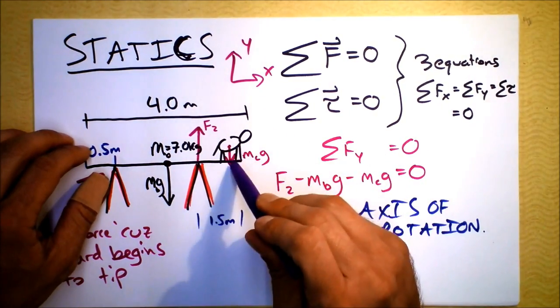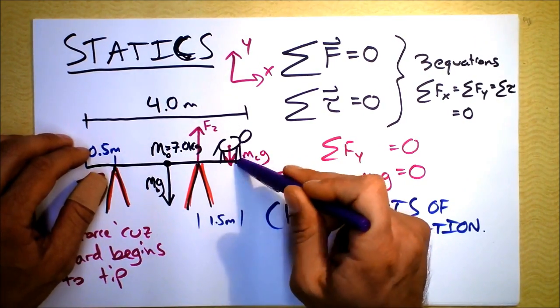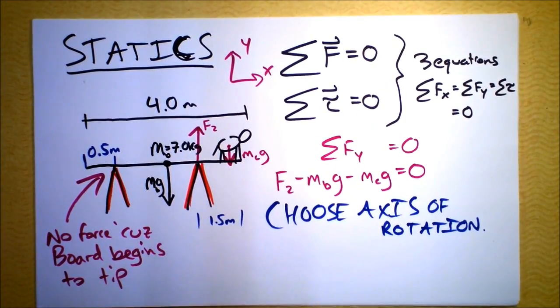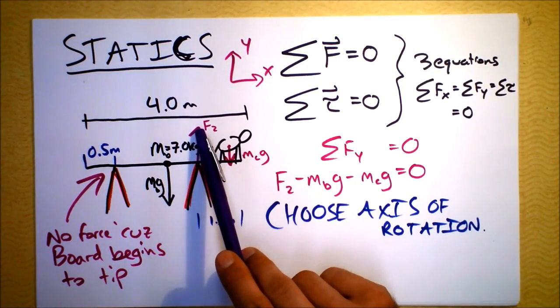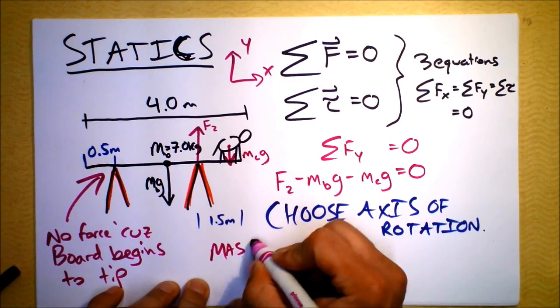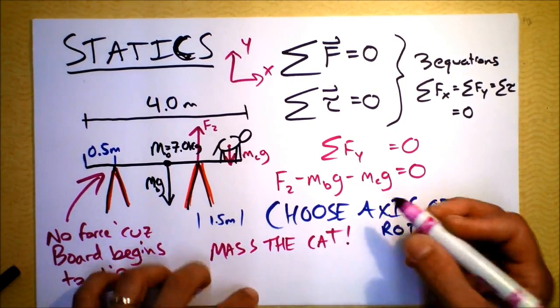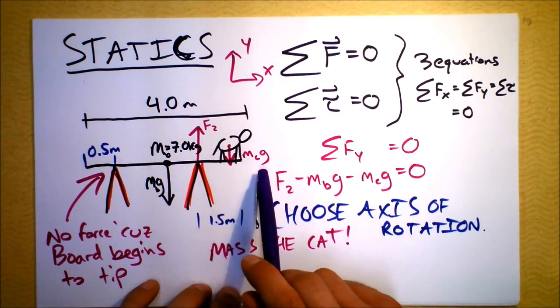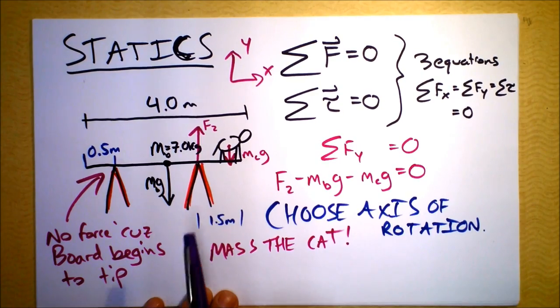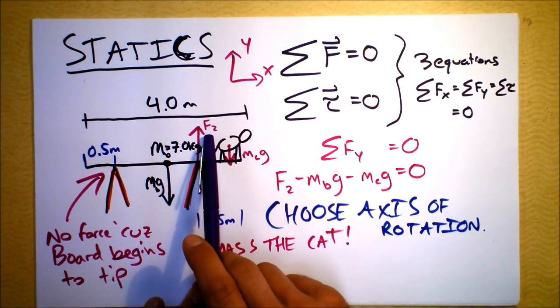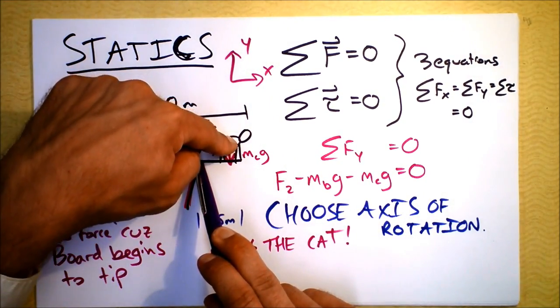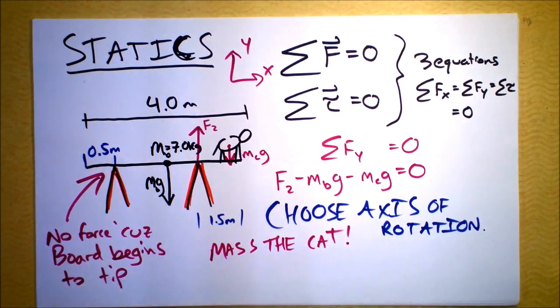If I choose the axis of rotation to be at the end of the board, 1.5 meters from this sawhorse, then we'll have a torque from that force and from that force. There are two things we don't know: we don't know the mass of the cat, so we don't know this force, and we don't know the force of this sawhorse. But we want to set it up so that we can find the one thing we're asked to find - the mass of the cat. We want the mass of the cat to cause a force which causes a torque on the system, and we don't want to deal with this F2, this pesky force that we don't know. So we put the axis of rotation right there. In that case, we'll have a torque from the cat and a torque from the board and nothing else. It's going to be a really lovely equation.